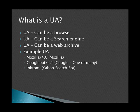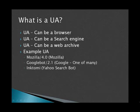A user agent can actually be a browser — it can be like Mozilla, the new Google Chrome, Opera, or Internet Explorer. All of those have distinct user agents. Another can be a search engine; for instance, Google or Yahoo all have their own bot user agents. It can also be a web archive, for instance like Alexa or webarchive.org.